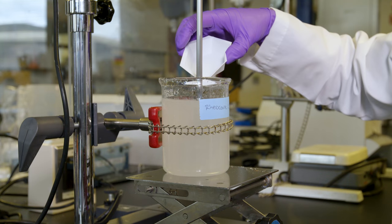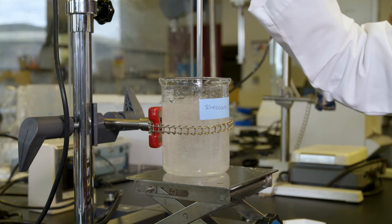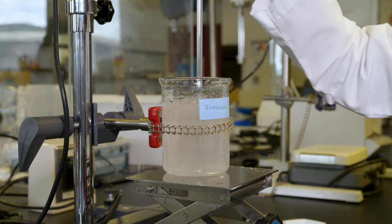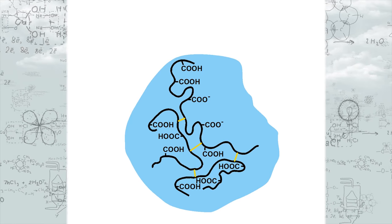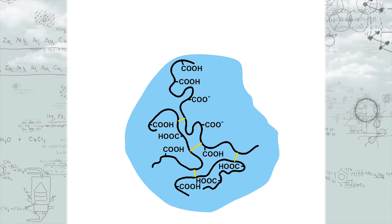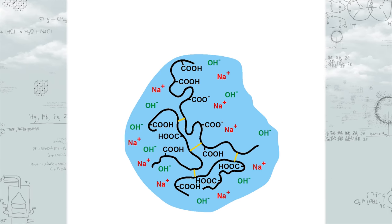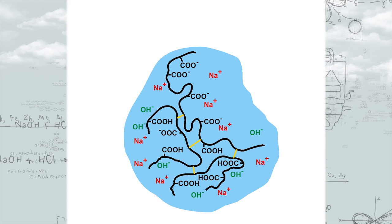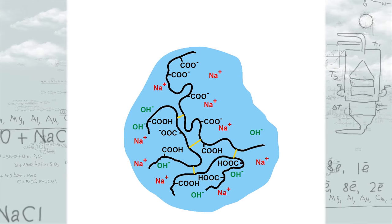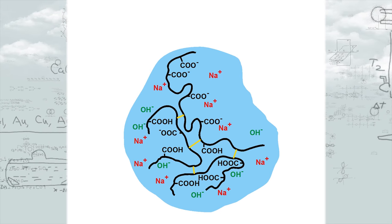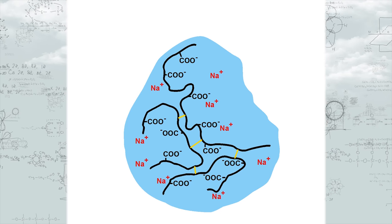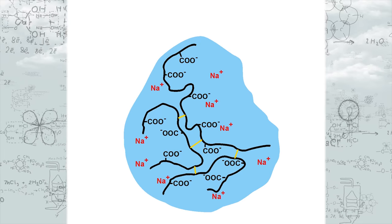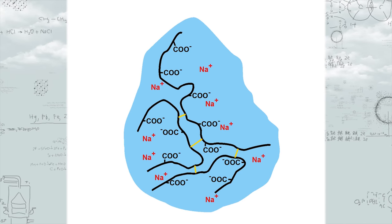Upon the addition of a neutralizer — in this case, sodium hydroxide — the solution begins to thicken. In the solution, the sodium hydroxide dissociates into sodium cations and hydroxide anions. The negatively charged hydroxide ions neutralize the protons, resulting in deprotonation of the carboxylic acid groups.